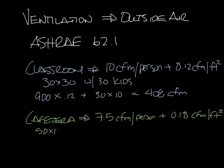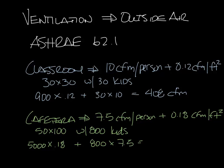And for the cafeteria, let's say it's 50 by 100 with 800 kids in it. So that would be 50 times 100 is 5,000 square feet times 0.18 plus 800 kids times 7.5, and that comes up to 6,900 CFM of fresh air.